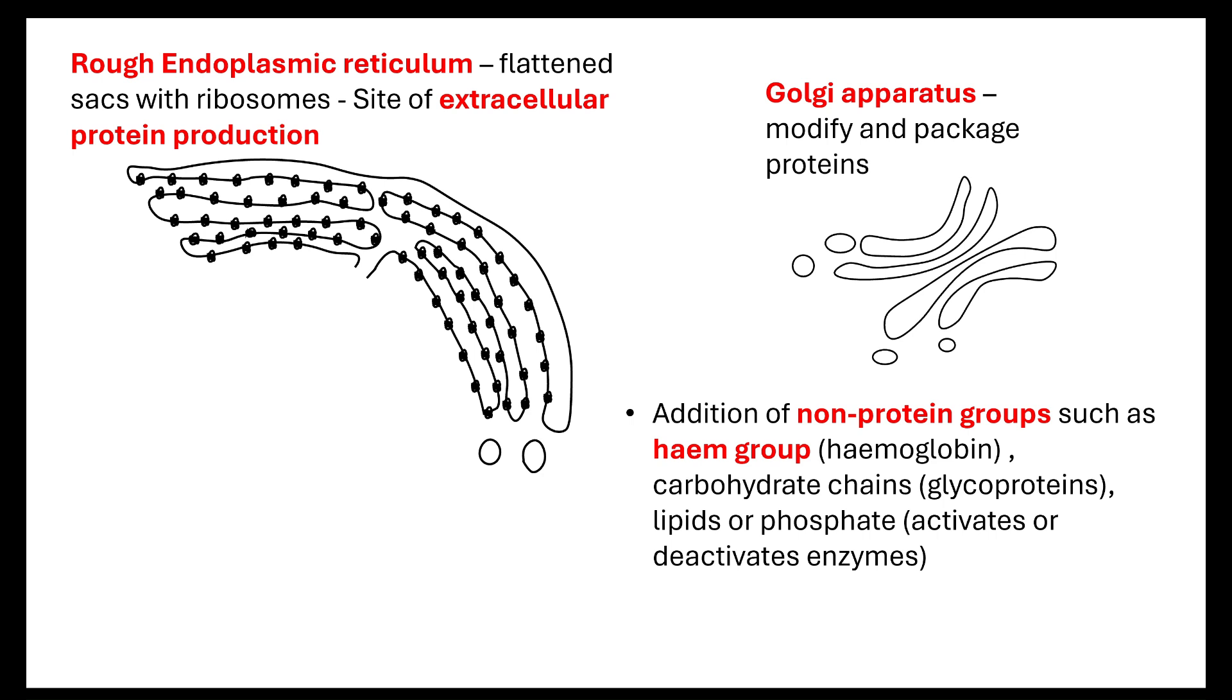It might be that we're adding on a carbohydrate chain, it might be that we're adding a lipid or a phosphate. We're going to activate or deactivate an enzyme by adding things to it. So this would be where it's modified in the Golgi apparatus. It could be that actually what we're going to do is we're going to get the quaternary structure. We're going to form bonds, those bonds being disulfide bridges if we were looking at immunoglobulins. So that modification is going to happen within the Golgi apparatus and then it's going to be packaged.